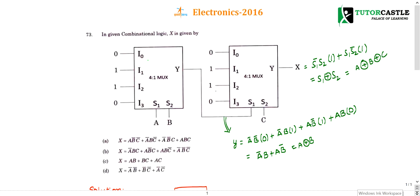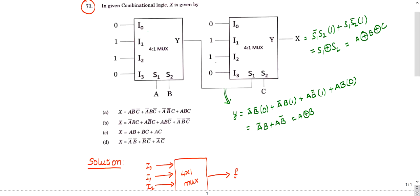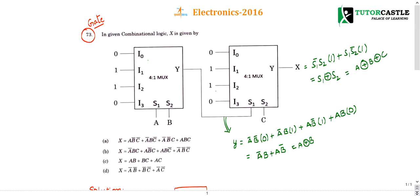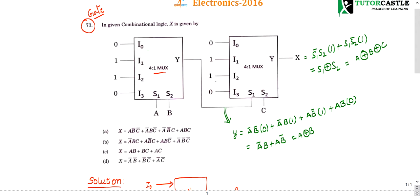Question number 73. In a given combinational logic, x is given by how much? For your kind information, I would like to say this is a previous gate question. This is also a gate question.